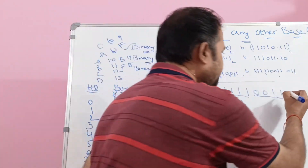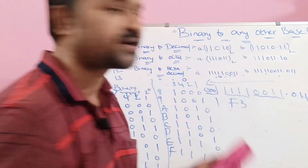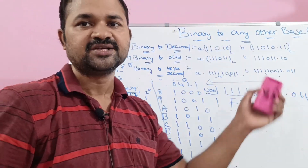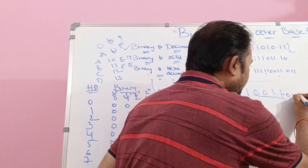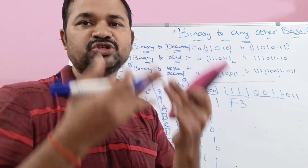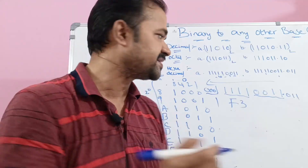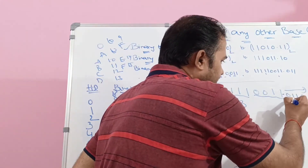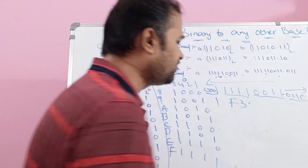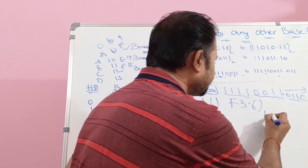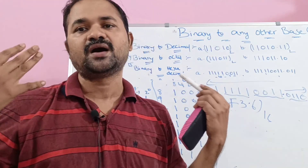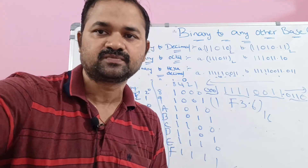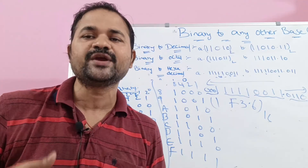The second problem includes a fractional part: .011. Since hexadecimal digits require 4 bits, we append one zero to get 0110 = 6. For fractional bits, we proceed from left to right. The final result is 1F3.6 base 16. This is how we convert a binary number to decimal, octal, and hexadecimal.